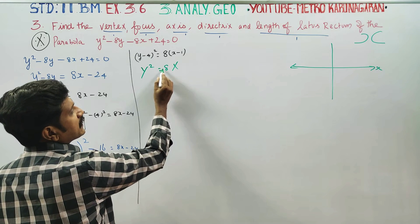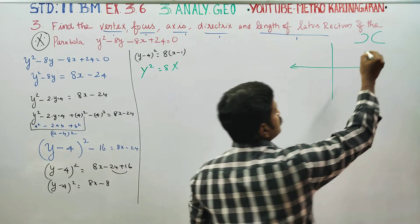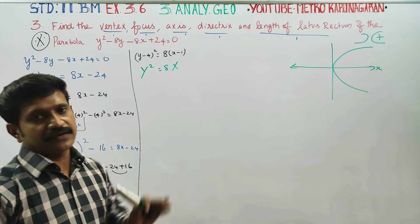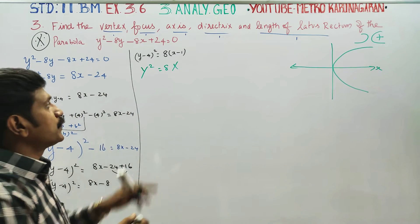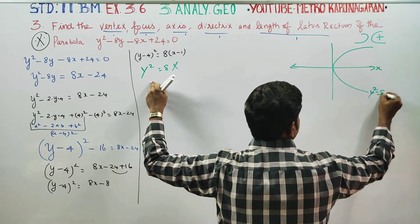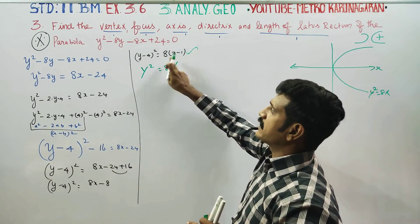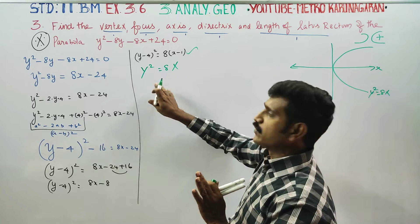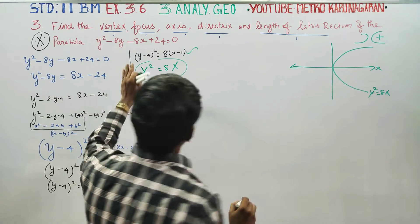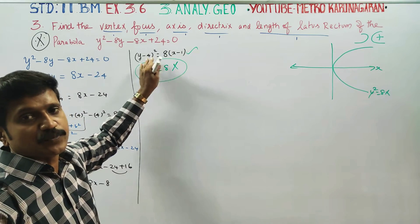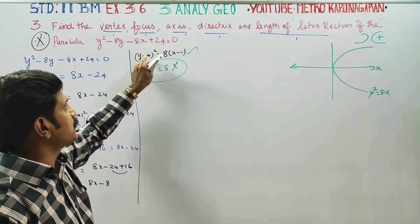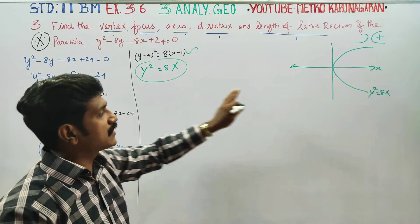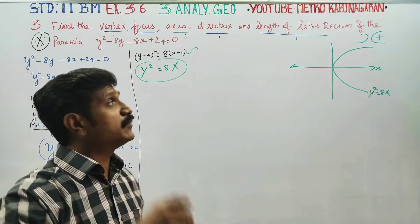A positive number opens right, a negative number opens left. Since x has a positive number, our parabola opens in the right-hand direction. Y squared equals 8x — this is the y-party and x-party. The parabola opens right-hand direction.